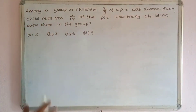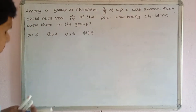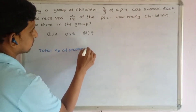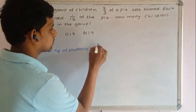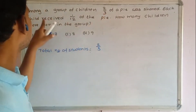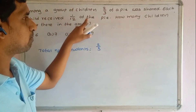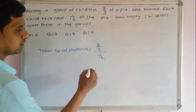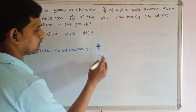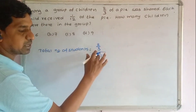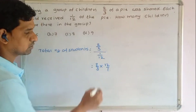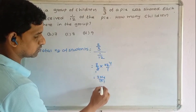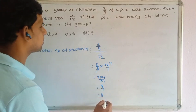The total pie shared is 2/3, and each student received 1/12. So the number of students equals 2/3 divided by 1/12. Converting division to multiplication: 2/3 multiplied by 12/1. Simplifying: 2 times 4 equals 8, divided by 1, which is 8. Therefore the number of students is 8.